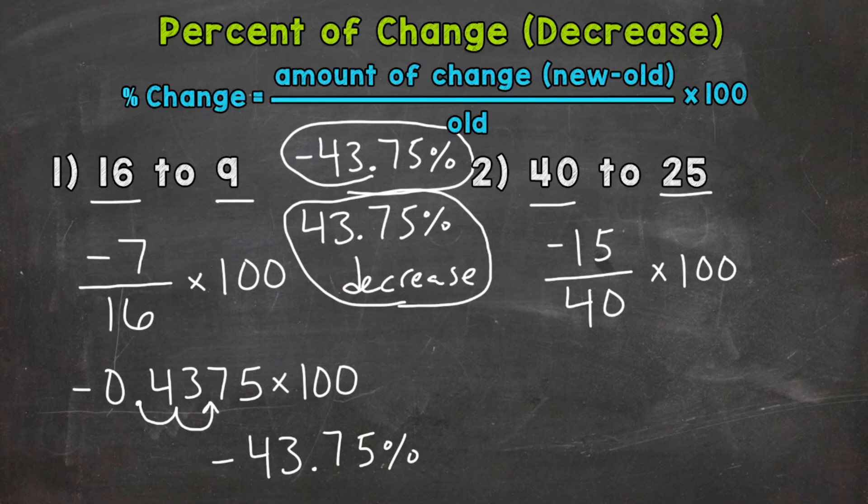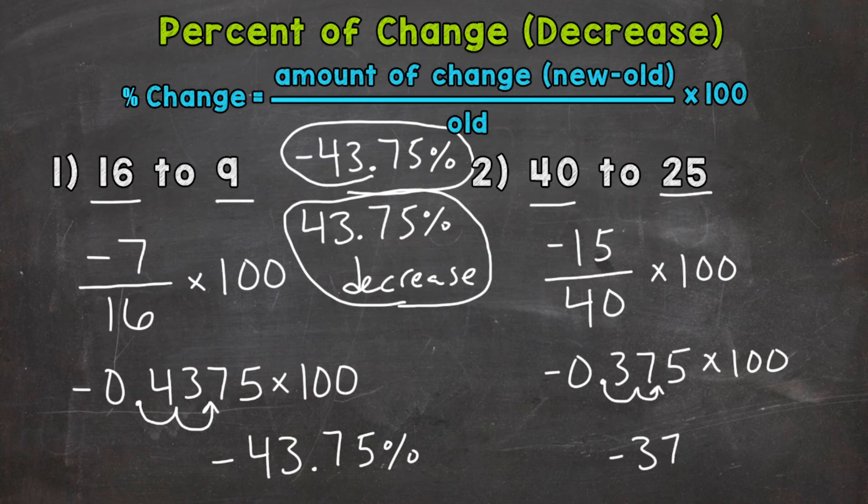So negative 15 divided by 40 is going to give us negative 0.375. Multiply that by 100. So move the decimal twice to the right, one, two. And we end up with negative 37.5 percent.